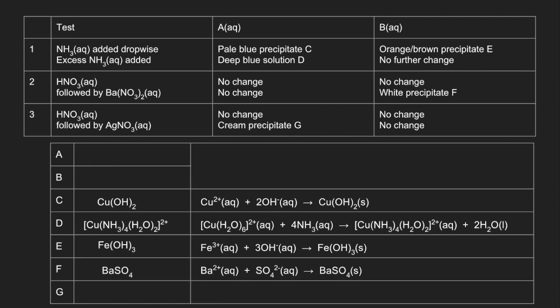Moving on to test 3, we've got no change for A with nitric acid and a cream precipitate G when silver nitrate solution was added. So the cream precipitate G must be silver bromide and its equation looks like that.